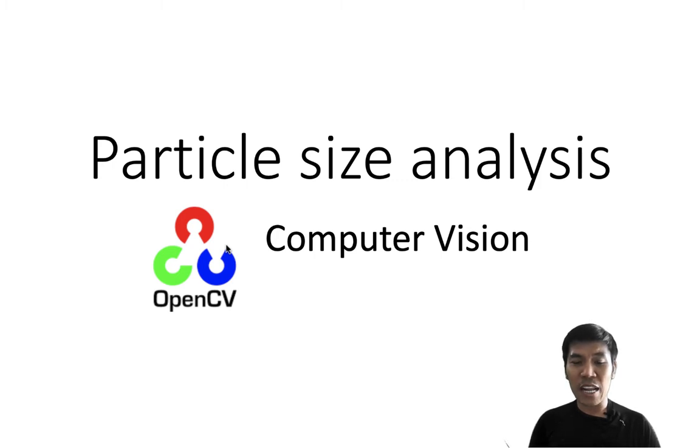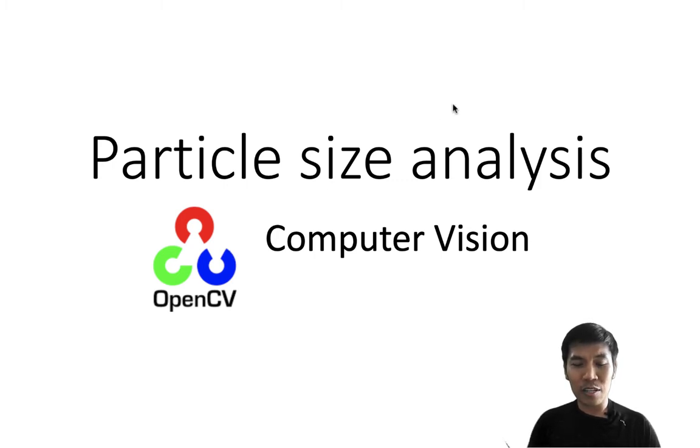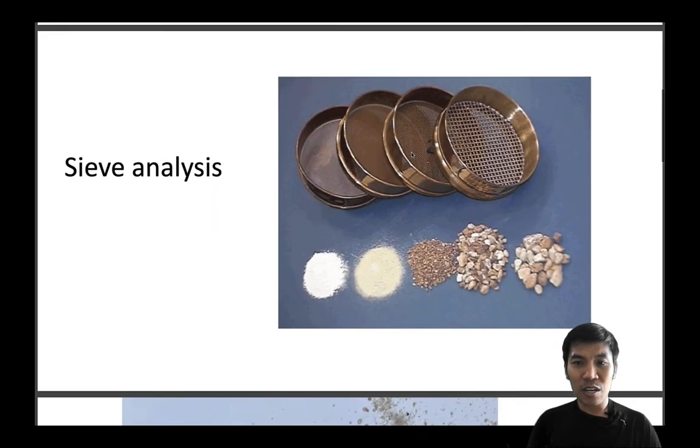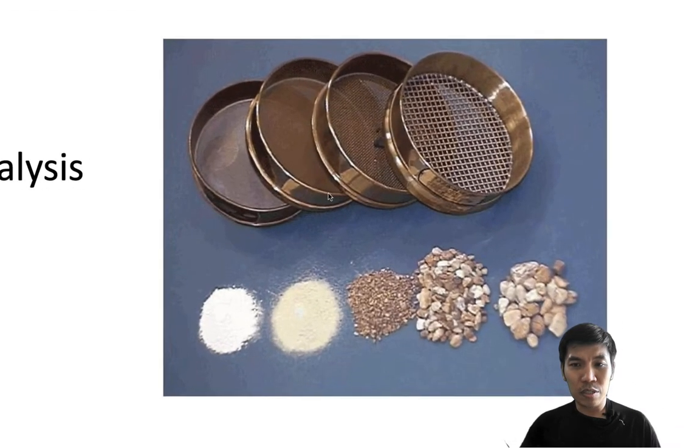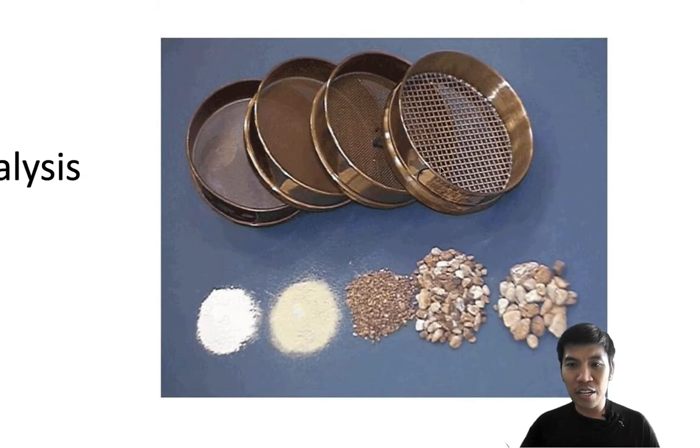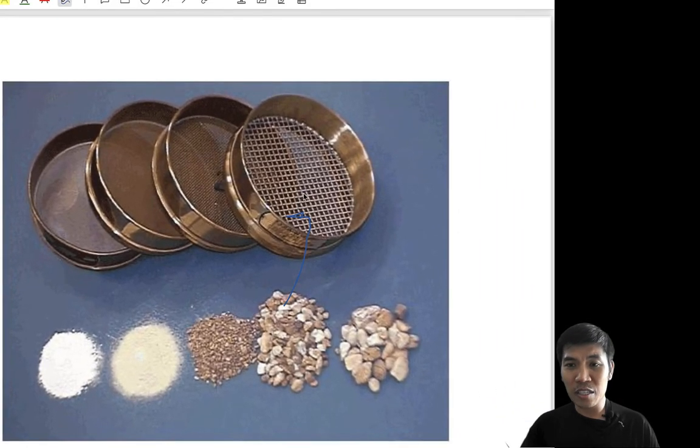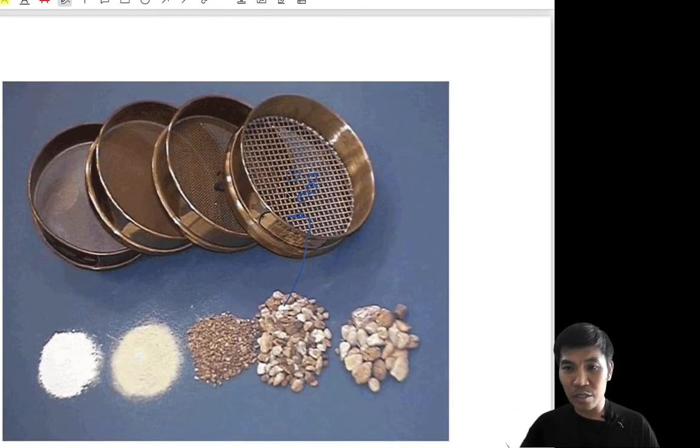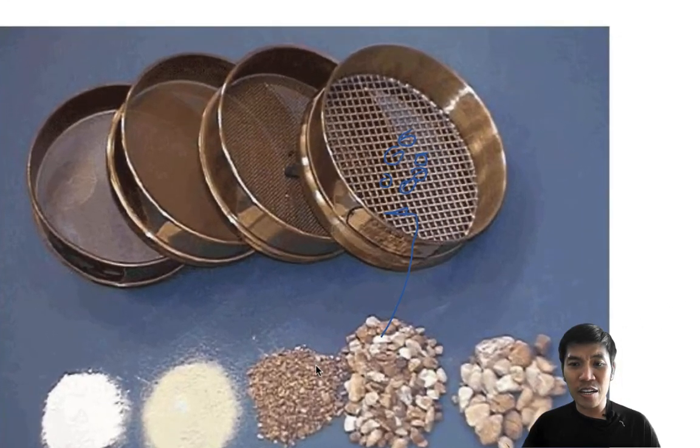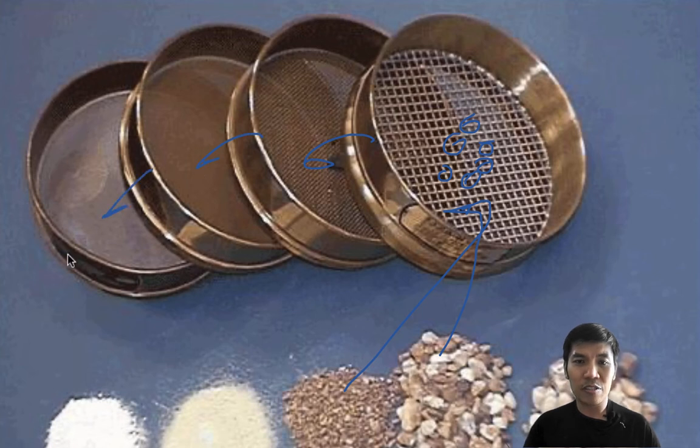According to the traditional or conventional method, we use sieve analysis. We put the soil into mesh sieves. If the soil particle is larger than the mesh, it will retain on the mesh. If the soil particle is smaller than the mesh, it will fall through into the corresponding sieve.